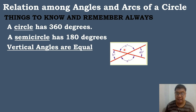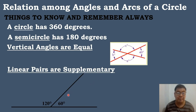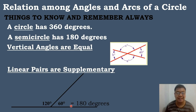Angle C is congruent to angle A, and angle B is equal to 40 degrees — meaning these two angles are congruent with each other. The next concept is that linear pairs are supplementary, meaning the sum of two angles equals 180 degrees. For example, 120 degrees plus 60 degrees equals 180 degrees, making them a linear pair.